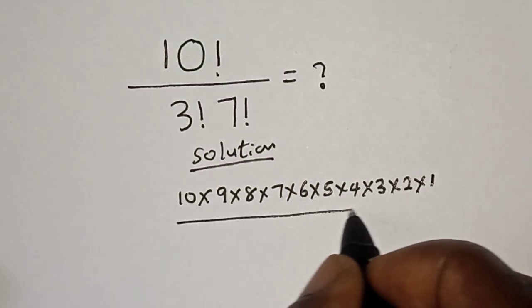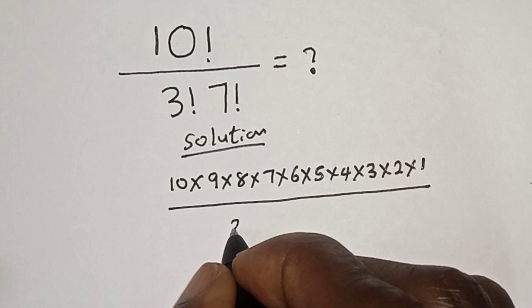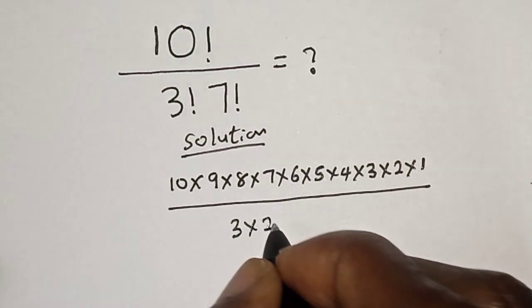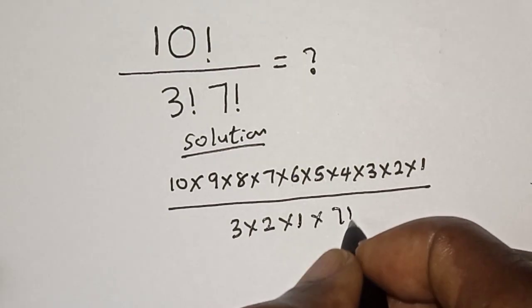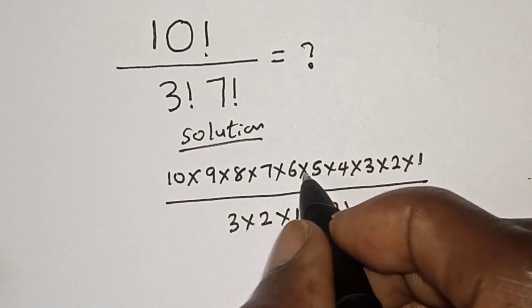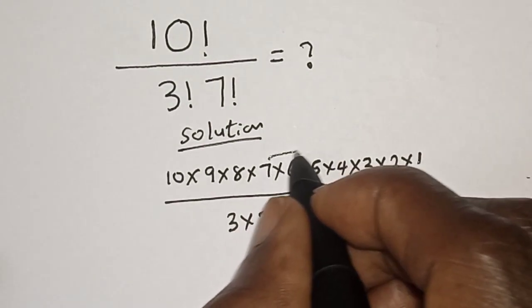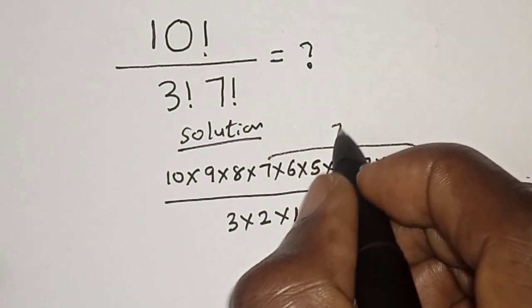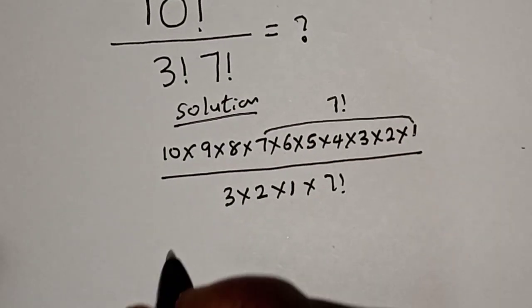Then over, we have 3 factorial is 3 times 2 times 1, times 7 factorial. From here, if you look at this, this is 7 times 6 times 5 times 4 times 3 times 2, which is 7 factorial. So we have 10...